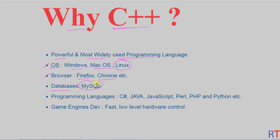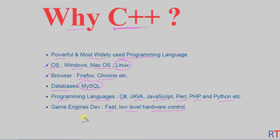C++ has been used in developing other programming languages like Java, JavaScript, Perl, PHP, Python, and so on. Because C++ is very powerful, fast, and has the capability of low-level hardware control, it has been used in developing game engines where performance is a key factor.